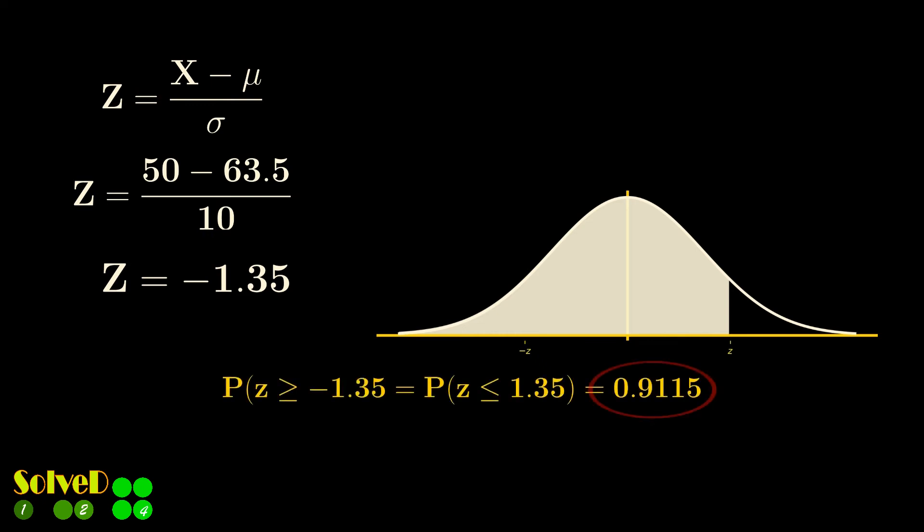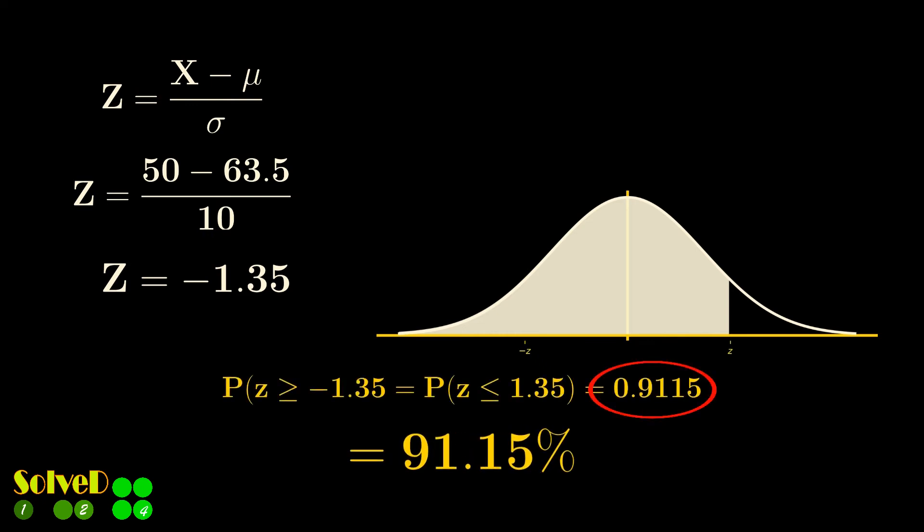This gives an area value of 0.9115 or 91.15%. And this is the required percentage of 15-year-olds in that country who weighed more than Mariska.